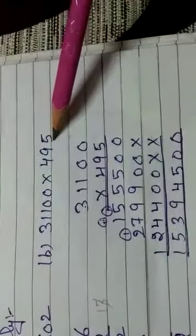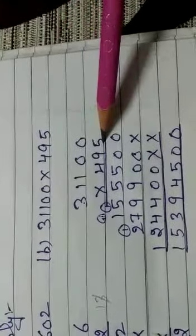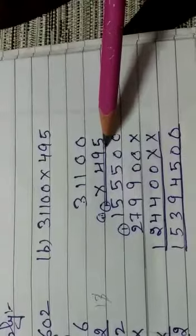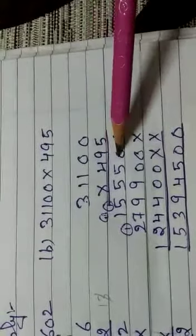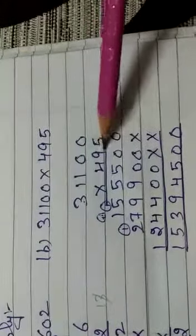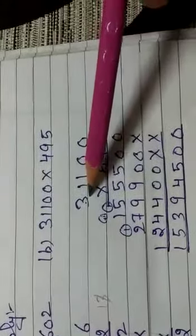You have to multiply this term by 495. And first of all, you will multiply 5 by 0. 0 again 0. 5 by 5. 5 by 3 is 15.